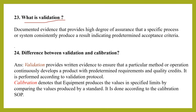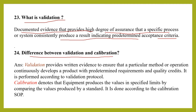What is validation? Validation is documented evidence that provides a high degree of assurance that a specific process or system will consistently produce a result meeting predetermined acceptance criteria. Calibration, by contrast, denotes that the equipment produces values within specified limits by comparing the values produced against a standard, and is performed according to a calibration standard operating procedure.